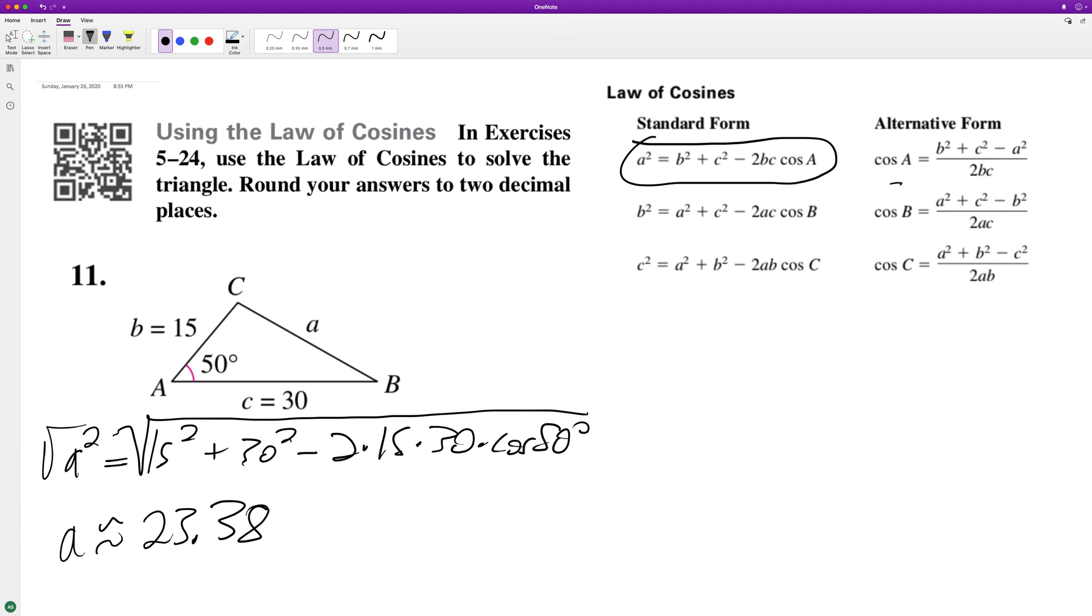We can go ahead and do that since we have all sides now. B equals inverse cosine of a squared (23.38 squared) plus c squared minus b squared, divided by 2 times a times c.